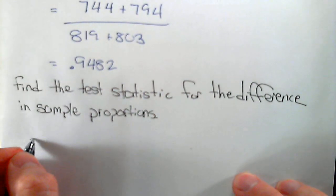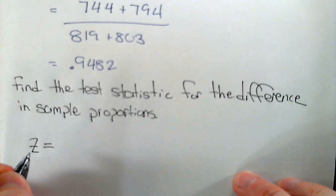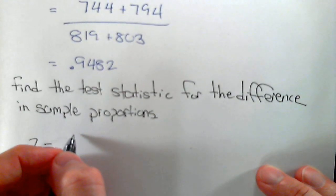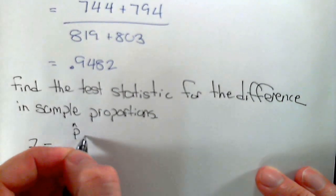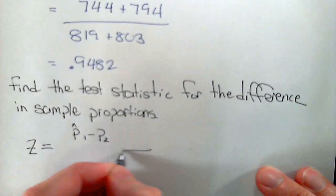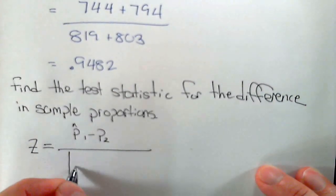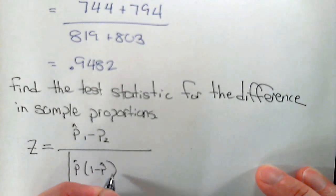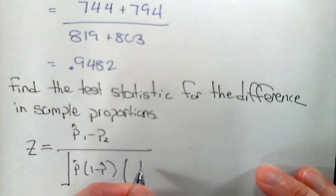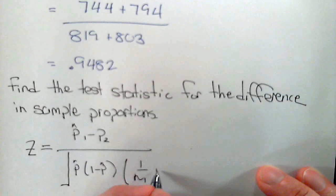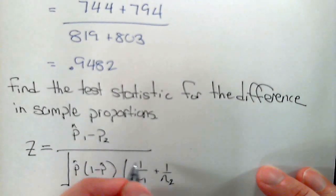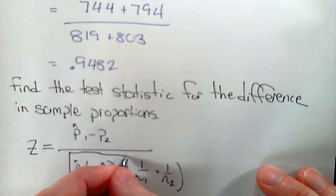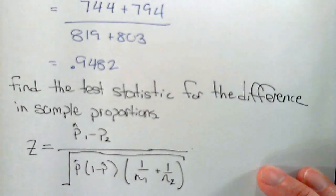The test statistic is going to be a standard normal value, and it's the difference in the two sample proportions divided by the pooled sample proportion times 1 minus the pooled sample proportion times 1 over the first sample size plus 1 over the second sample size, and that's all in the radicand which is all in the denominator.